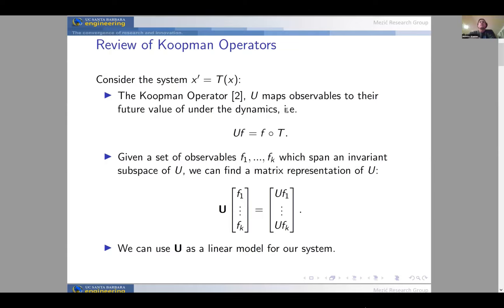As a quick review, if we have a discrete time dynamical system x prime equals T of x, we can define the Koopman operator on that system. The Koopman operator U maps observables to the future value under the dynamics of the system. The Koopman operator is also called a composition operator, composing a function with the map T. One of the largest benefits is that the Koopman operator is a linear operator.